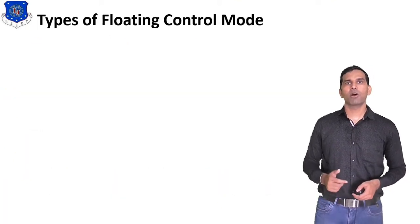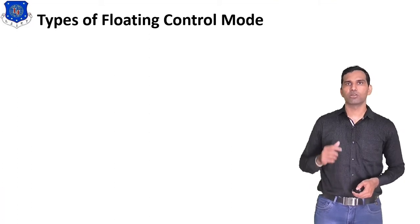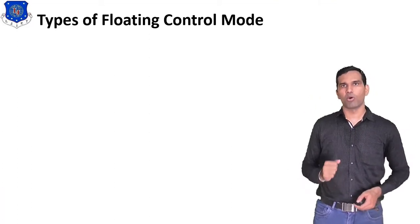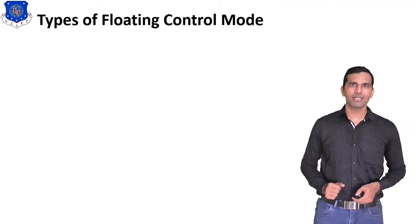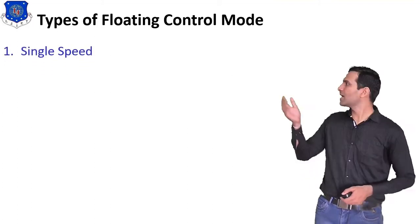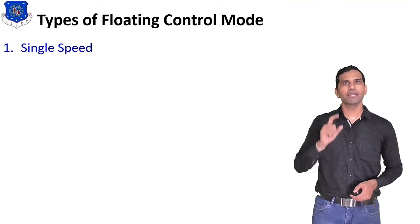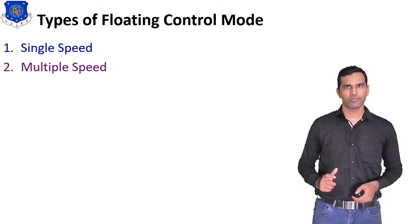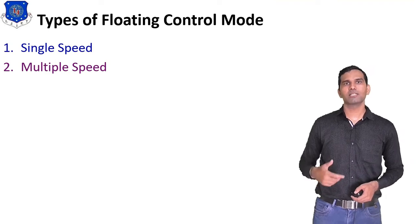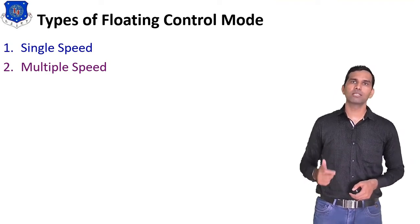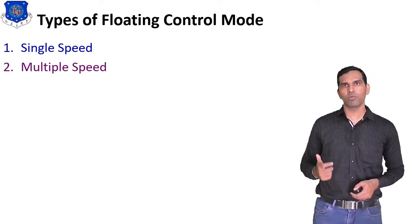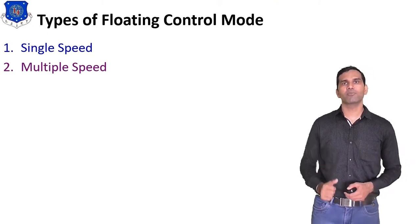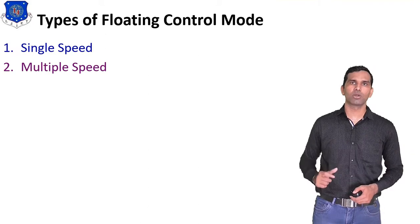Now we discuss the types of floating control mode. There are mainly two types: the first is single speed and the second is multi speed. We will discuss what single speed and multi speed control modes are.